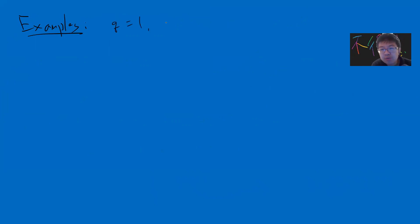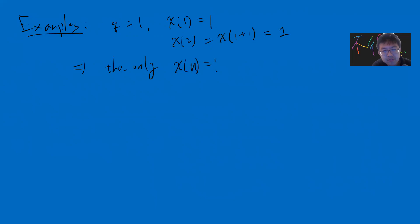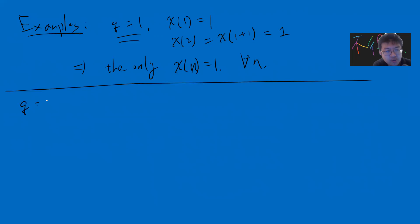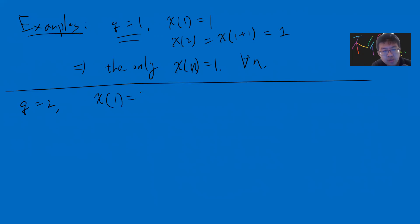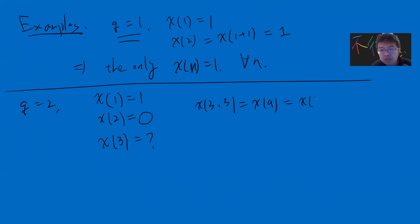Let's look at examples. For q = 1, χ must be periodic with period 1, so χ(n) = 1 for all n — the only Dirichlet character is the trivial one. For q = 2: χ(1) = 1, χ(2) = 0 since gcd(2,2) ≠ 1. For χ(3): since 3² = 9 ≡ 1 mod 2, we get χ(3)² = 1, so χ(3) = ±1. But periodicity forces χ(3) = χ(1) = 1, so there is only one character for q = 2.